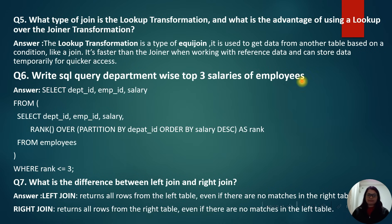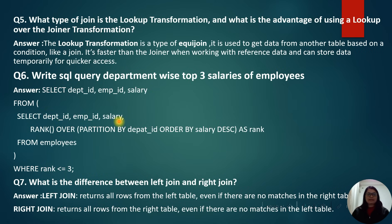The next question: write an SQL query for the department-wise top three salaries of employees. You can use RANK() with OVER, using PARTITION BY department_id and ORDER BY salary. The query selects department_id, employee_id, and salary from a subquery that uses RANK() OVER (PARTITION BY department_id ORDER BY salary DESC) AS rank FROM employee, then filters WHERE rank <= 3. If they ask for top 2, simply change the value to 2.